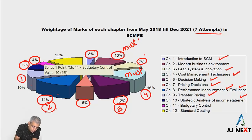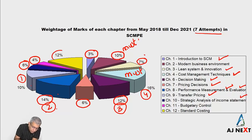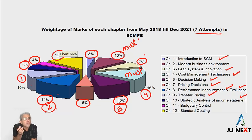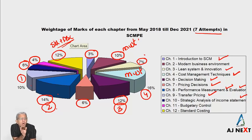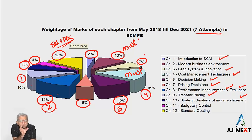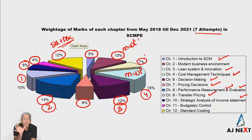Budgetary Control might be a candidate for the future, but in the past it has not been much asked — whatever questions appeared were theory only. Then again, one of the hot favorite topics is Standard Costing, which comes in some form or the other. Standard Costing plus Activity-Based Costing is something ICAI has loved in the past — though hopefully they will start asking more analytical questions using that data to make the company better.